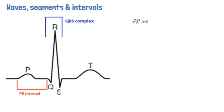The PR interval commences at the start of the P wave and ends at the start of the QRS complex. It represents the time taken for the electrical impulse to be conducted through the AV node. It is between 120 ms to 200 ms, that is 3 to 5 small squares, under normal circumstances.